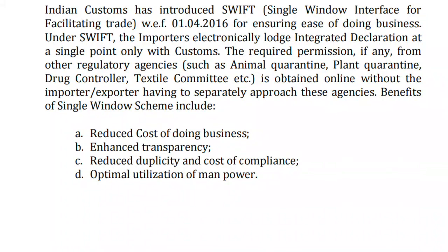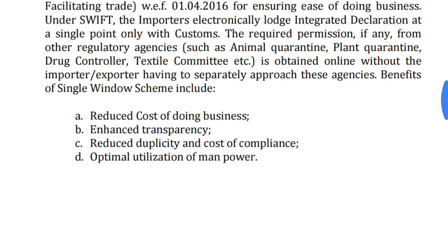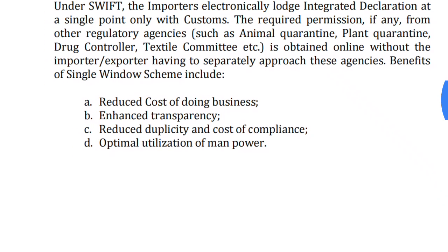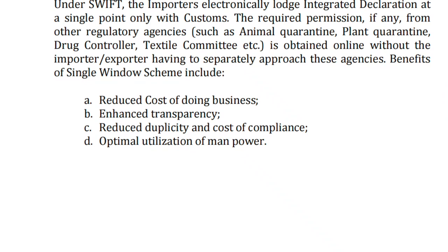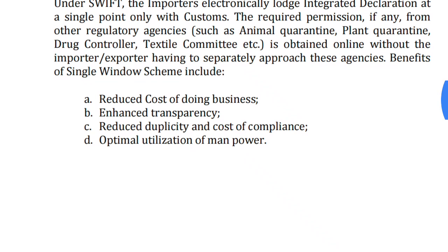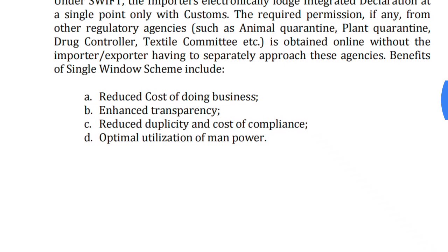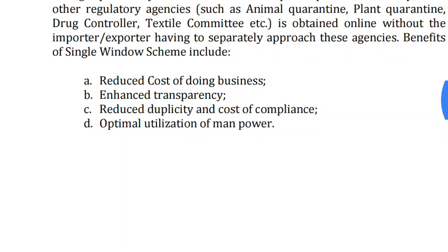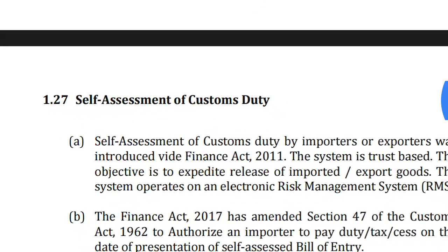The single window system also reduces duplicacy and compliance costs. Your goods are maintained under the customs EDI system, so the market value of the product is also monitored. Duplicacy is automatically recognized by the customs software — for example, if you import the same kind of goods from the same port again, the system reflects this. There is no need to use manpower to visit multiple departments. These facilities greatly help importers and exporters.